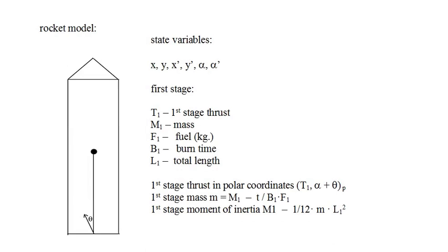Thrust is directed theta degrees off the rocket's centerline, as shown in the diagram. Theta is our thrust direction control variable, and we will program it directly. The thrust direction in the simulation frame is alpha plus theta. Since the fuel weight is a significant part of the rocket's total weight, we will model the decrease in the rocket's mass as it burns. At time t, the fraction of the fuel that has been burned is t divided by B1, the stage 1 burn time, and the mass at time t is calculated as the initial mass M1, minus t over B1 times the amount of fuel for stage 1.